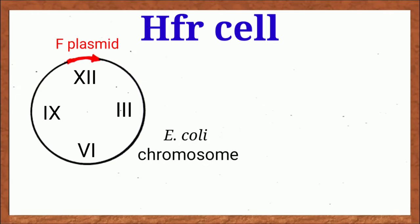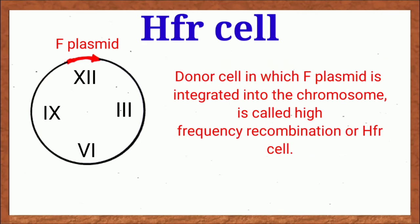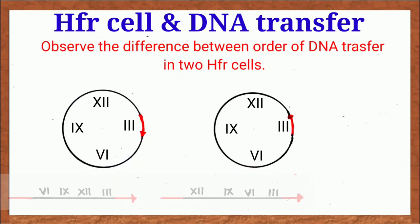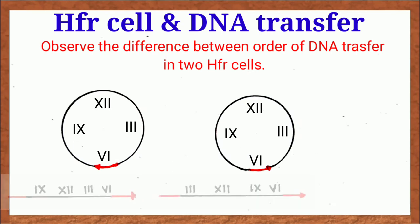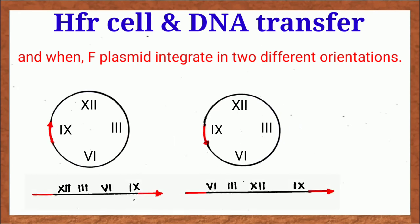The interesting thing is that when F plasmid is in integrated state, it can able to transfer chromosomal genes, resulting large number of recombinant cells. That's why those cells are called HFR or high frequency recombination. Another interesting thing is that F plasmid can integrate at different locations in the chromosome and in different orientations. So different HFR cells initiate chromosomal gene transfer in different order depending on its integration site and its orientation.